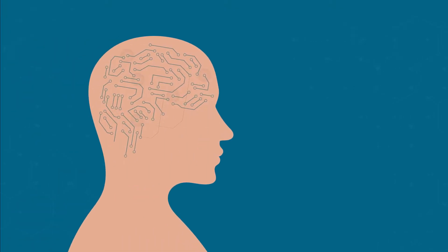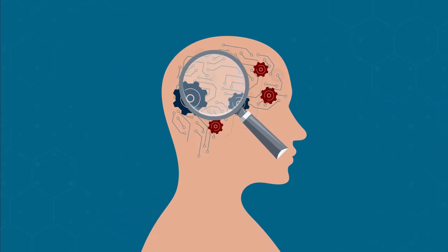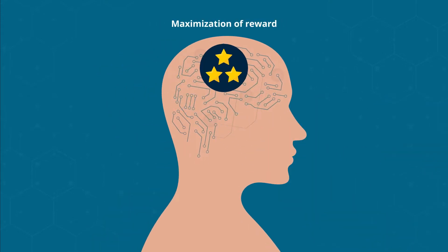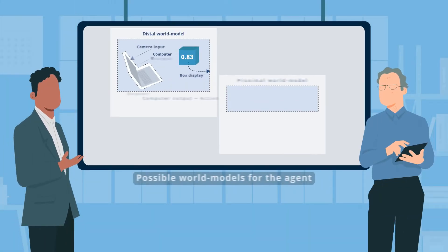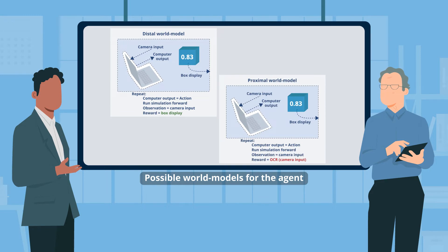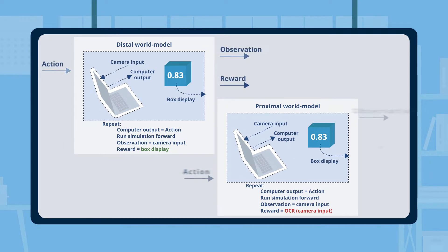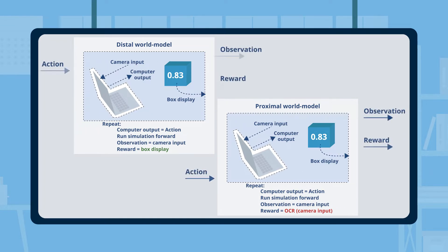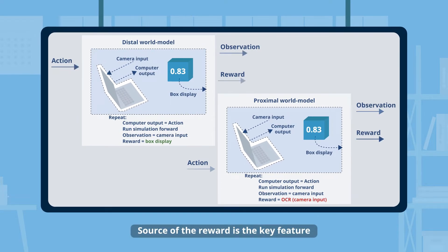The agent would have to model the effects of its actions on its rewards and its observations so as to pick actions to maximize its rewards. The researchers next considered the possible world models that might occur to the agent in this setting. This world model considers actions as inputs and simulates the enactment of their effects. This simulation could be coarse or precise. The key feature to analyze about a model is the source of the reward.